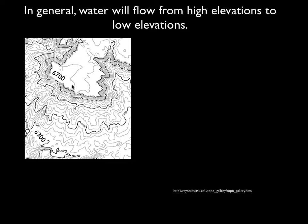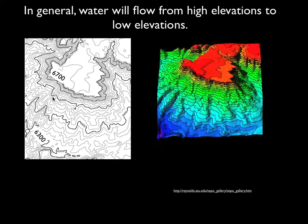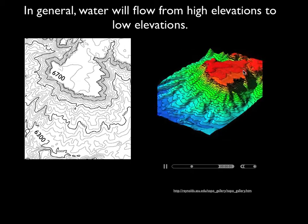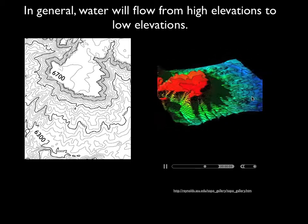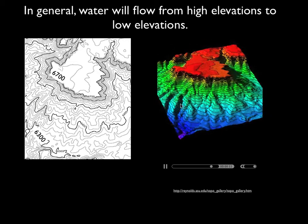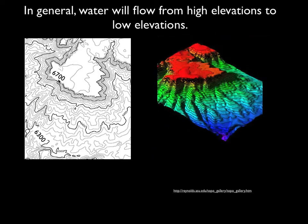In general, water always flows from high elevations of the water table to low elevations. Looking at this contour map in three dimensions, it looks like this—the red areas are high, the blue areas are lower. You can look at this picture and figure out which way groundwater would flow.